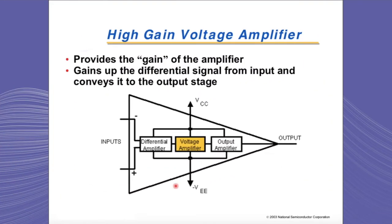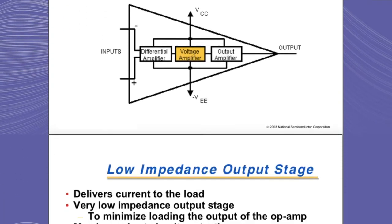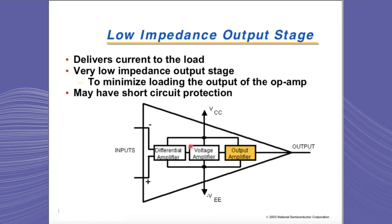The next stage of the op-amp is the voltage gain stage. The gain stage is mainly responsible for gaining up the input signal and sending it to the output stage. It's worth mentioning that there are many different op-amp designs, and some may have more or less than the classical three stages. The op-amp must also have very low output impedance, which minimizes loading of the output stage. The output stage delivers current to the op-amp's load and may or may not have short-circuit protection.